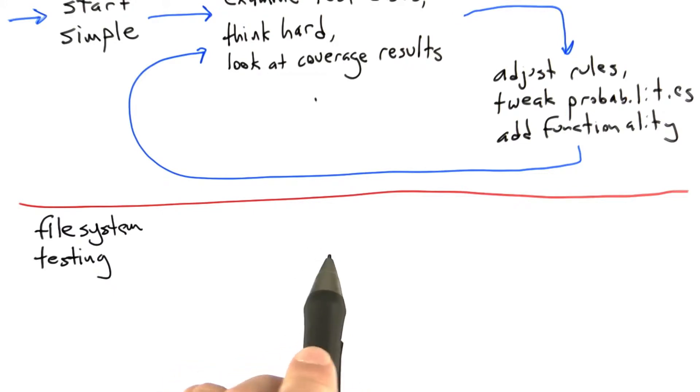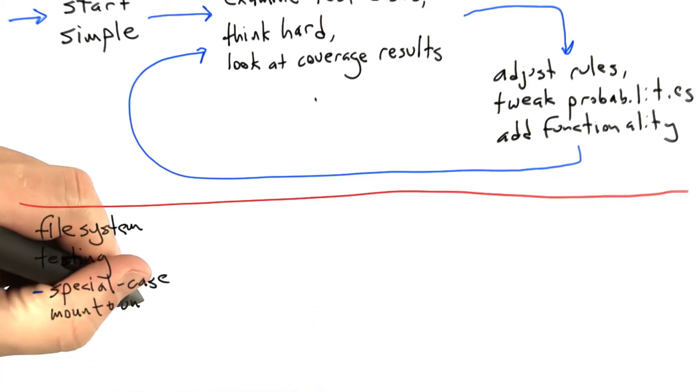Similarly, if there's no correlation in randomly chosen file names between different calls to open, close, read, and write, we may effectively never perform a read or write call on an open file. That's obviously undesirable.